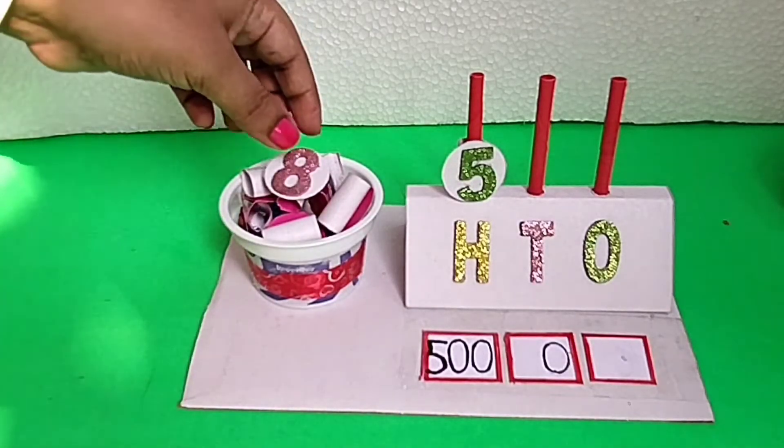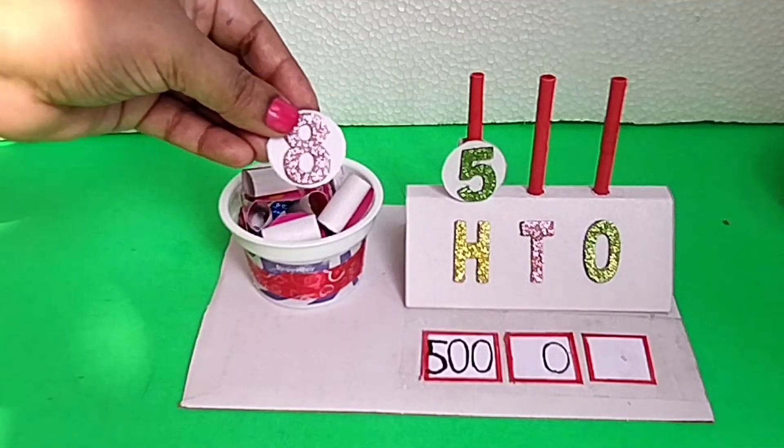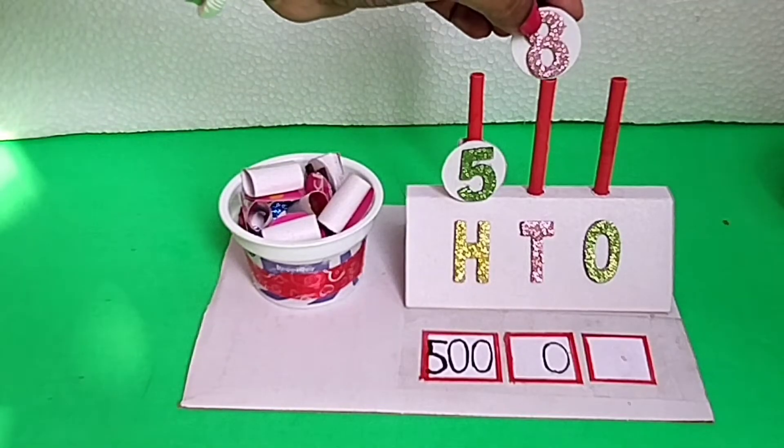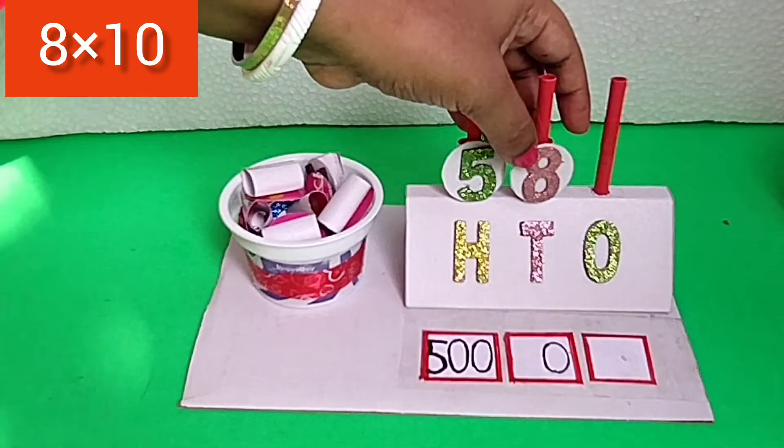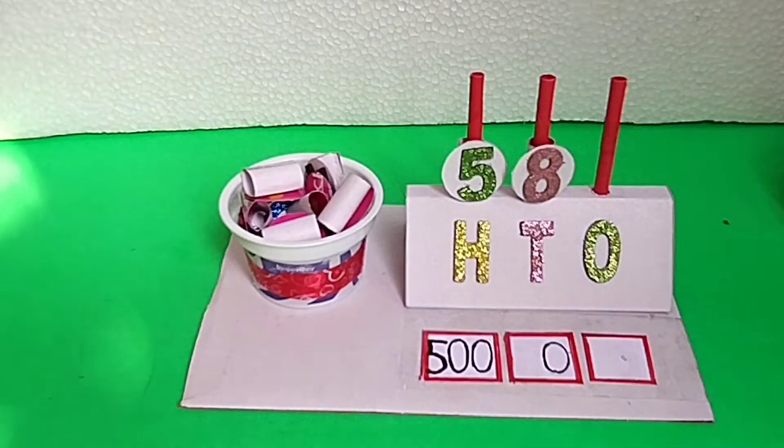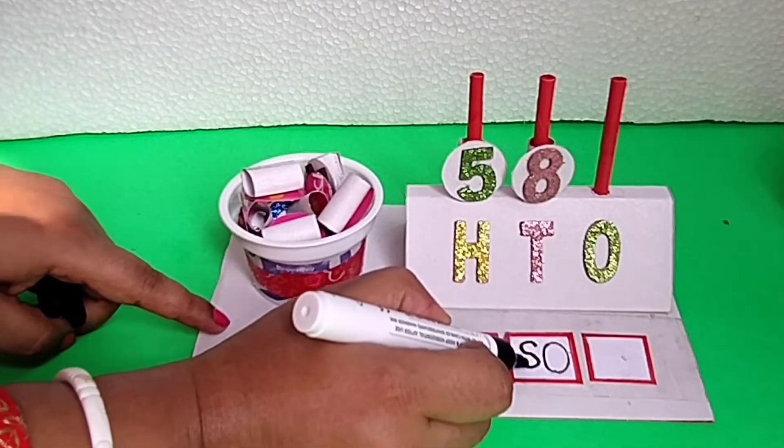Now, the face value of digit 8 is 8. As the number 8 is in the tens column, it means there are 80. And the place value of 8 is 80.